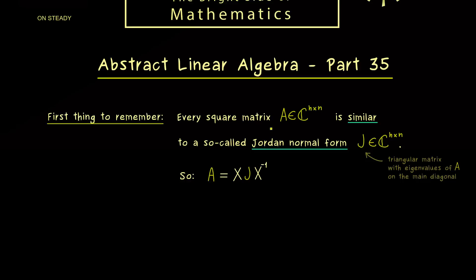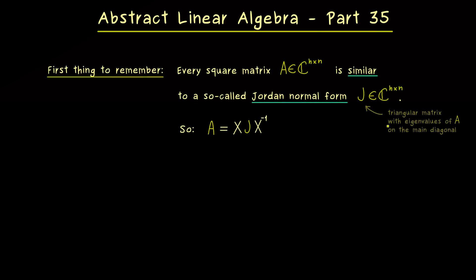Indeed, this whole Jordan Normal Form transformation is the common generalization for the diagonalization. This means in the case that A is a diagonalizable matrix, the corresponding Jordan Normal Form is a diagonal matrix.